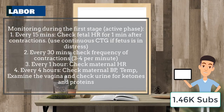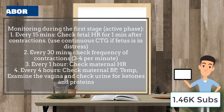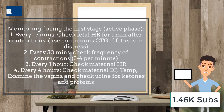Monitoring during the active phase of labor can be done every 15 minutes — ensure that you check the fetal heart rate for one minute after contractions. Use continuous cardiotocography if there is fetal distress. Every 30 minutes, check the frequency of contractions; normally you should have about three to four contractions per minute.